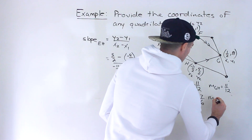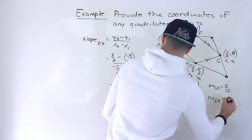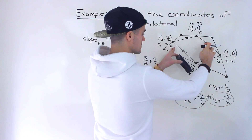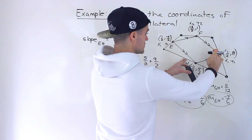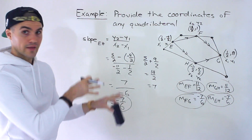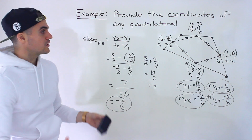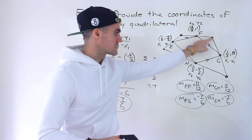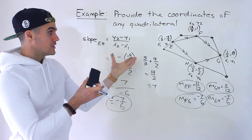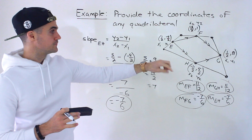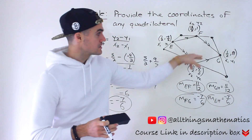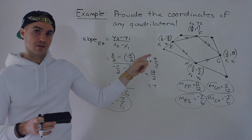We confirmed the property. So no matter what quadrilateral you choose: FG and EH are both parallel, and EF and GH are both parallel — they have the same slope. That confirms we're dealing with a parallelogram. It's a pretty cool property: you could pick literally any coordinates for that quadrilateral — whole numbers, fractions, decimals — and no matter what numbers you pick, when you find the midpoints, those midpoints are always going to form a parallelogram.